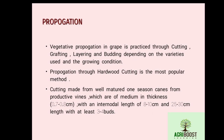The major propagation method followed in grape cultivation is vegetative propagation, practiced through cutting, grafting, layering, and budding — depending on the variety and growing conditions. The popular commercial method of propagation is hardwood cutting, a very common and widely used method.